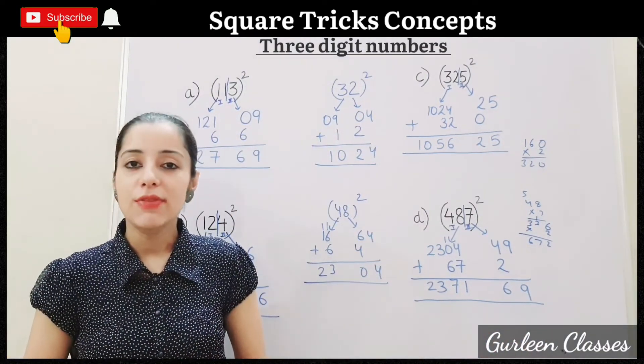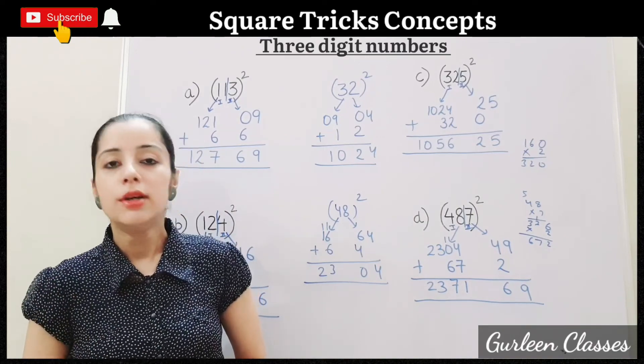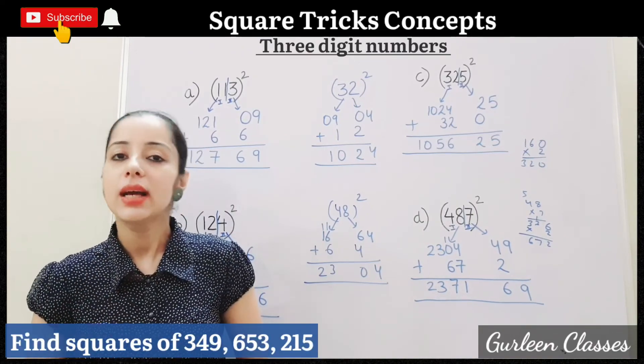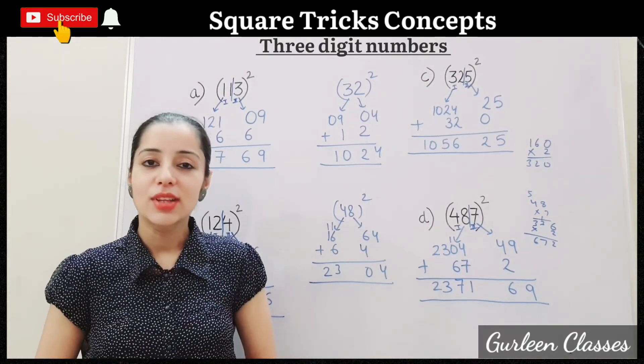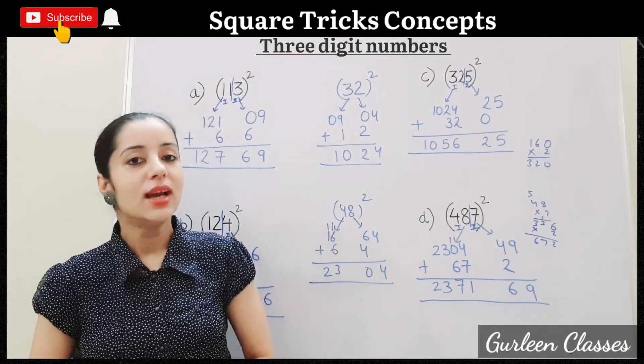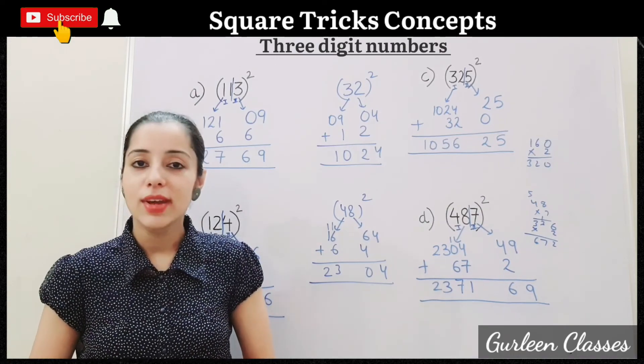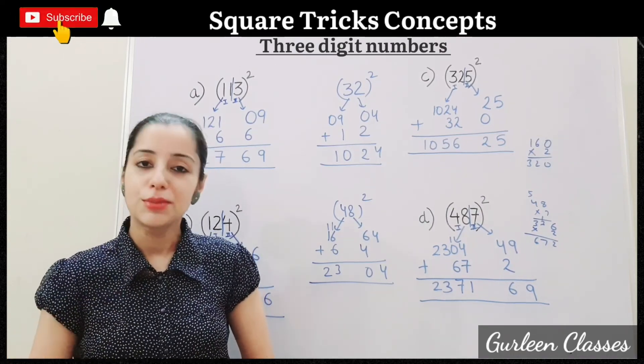So I hope students now you can easily find out squares of 3-digit numbers. Few questions I have given you on the screen. Answer me in the comment box. Students that's all for this class. I hope you are interested in square tricks for the numbers between 1 to 1000. In the next class I am telling you some more tricks. Stay connected. Do like, share and subscribe to my YouTube channel.